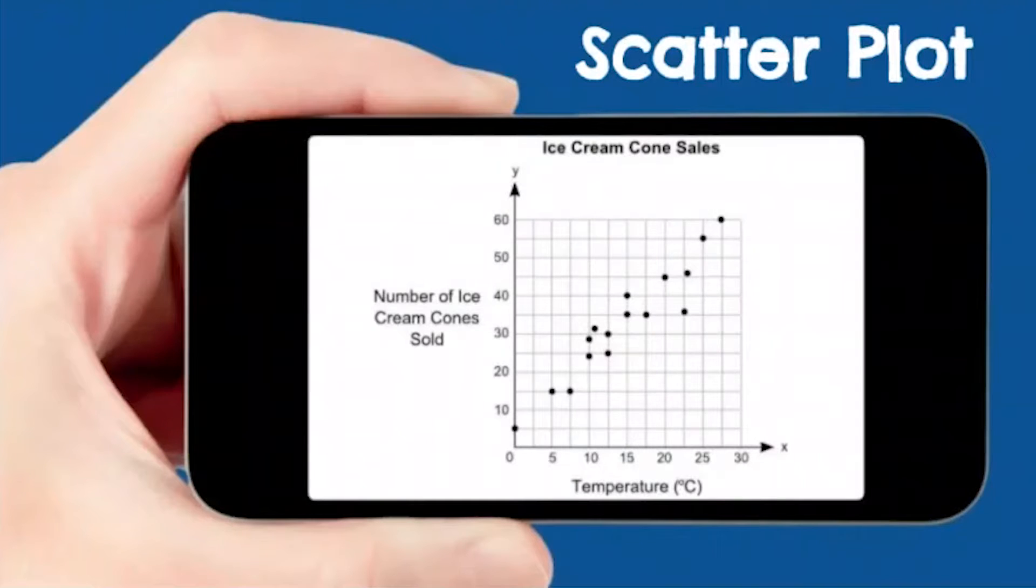This is an example of a scatter plot. A scatter plot is a type of graph that shows the relationship between two sets of numerical data. It's very similar to coordinate graphing. You have your x-axis and your y-axis. In this example, we're talking about ice cream cone sales. The x-axis represents temperature, and the y-axis represents the number of ice cream cones sold.